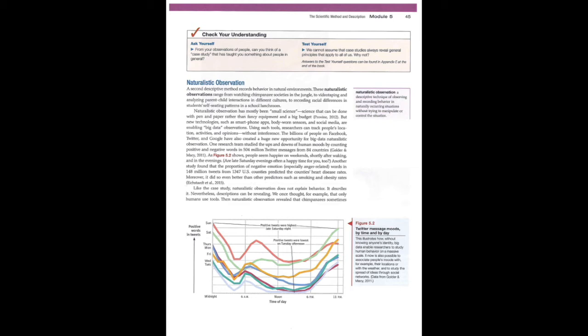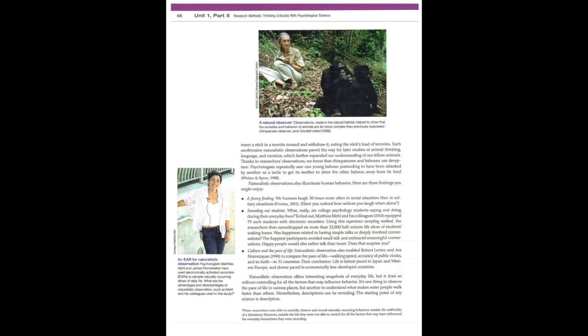Like the case study, naturalistic observation does not explain behavior. It describes it. Nevertheless, descriptions can be revealing. We once thought, for example, that only humans use tools. Naturalistic observation revealed that chimpanzees sometimes insert a stick in a termite mound and withdraw it, eating the stick's load of termites. Such unobtrusive naturalistic observations paved the way for later studies of animal thinking, language, and emotion, which further expanded our understanding of our fellow animals. Thanks to researchers' observations, we know that chimpanzees and baboons use deception. Psychologists repeatedly saw one young baboon pretending to have been attacked by another as a tactic to get its mother to drive the other baboon away from its food.